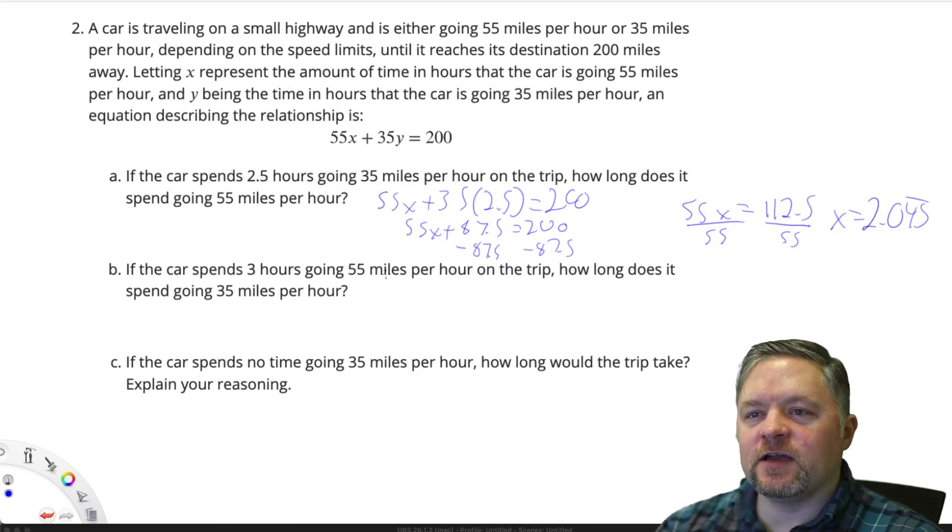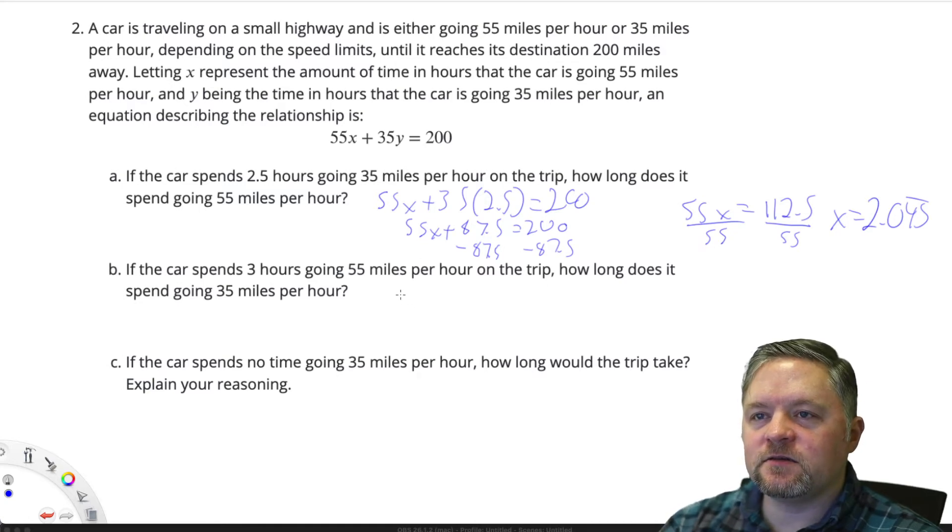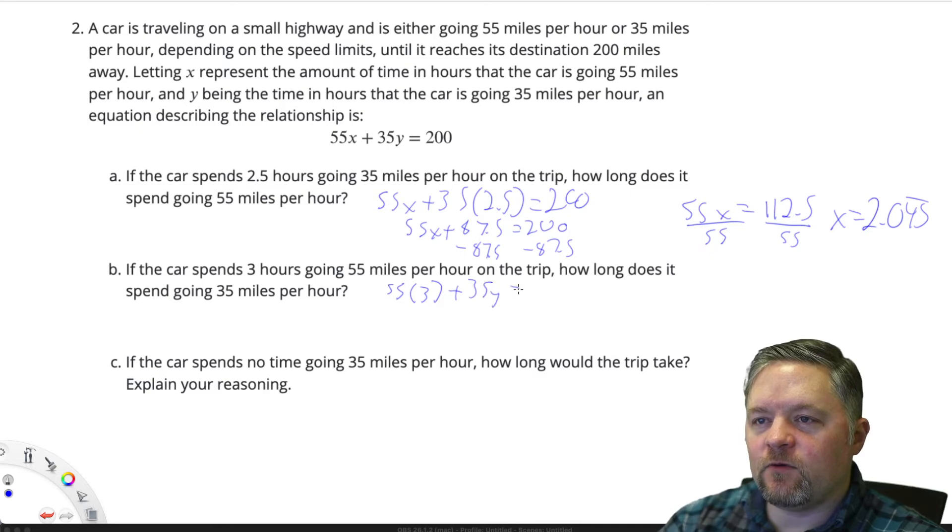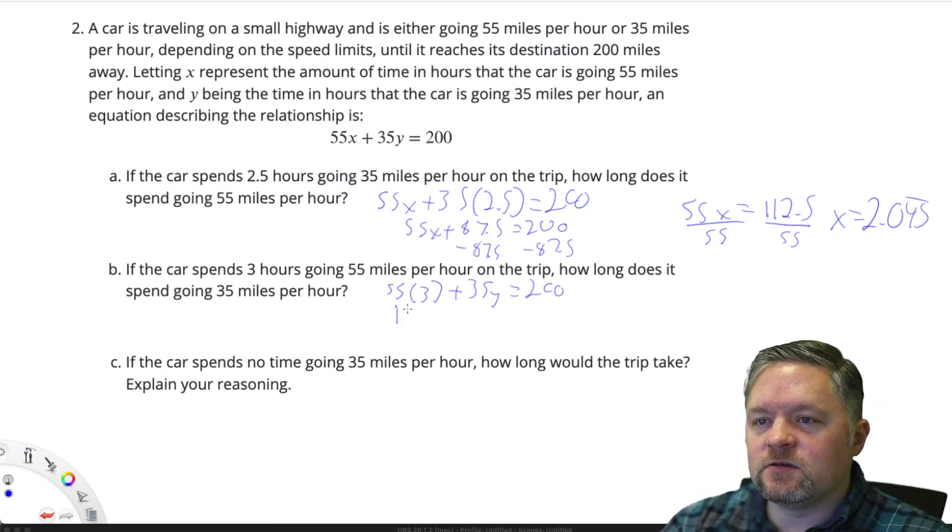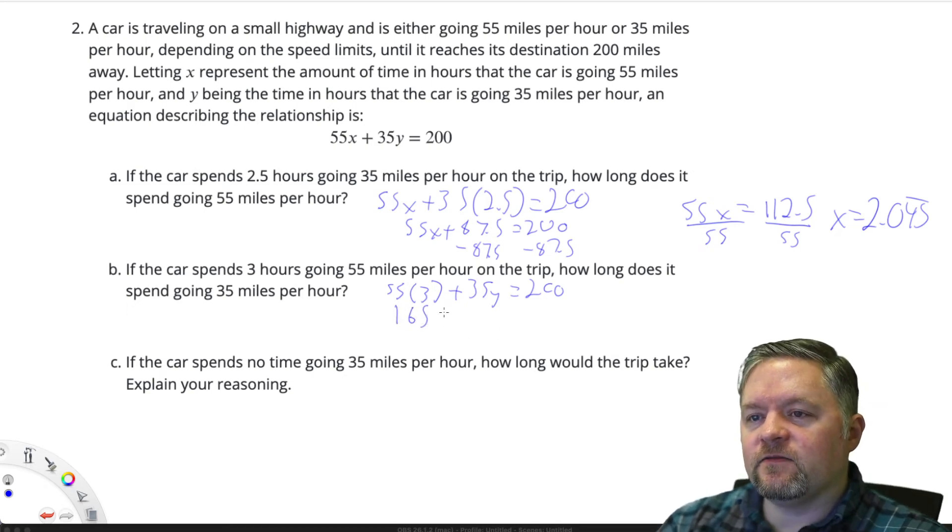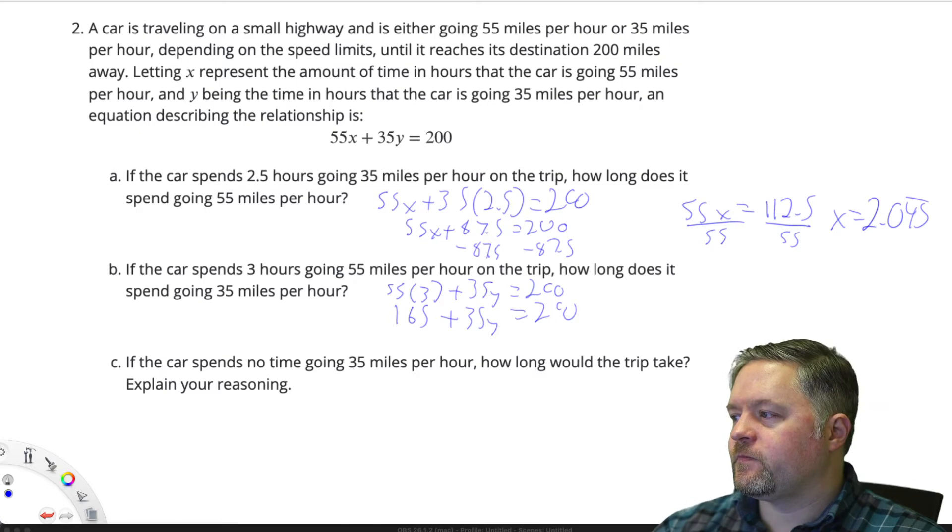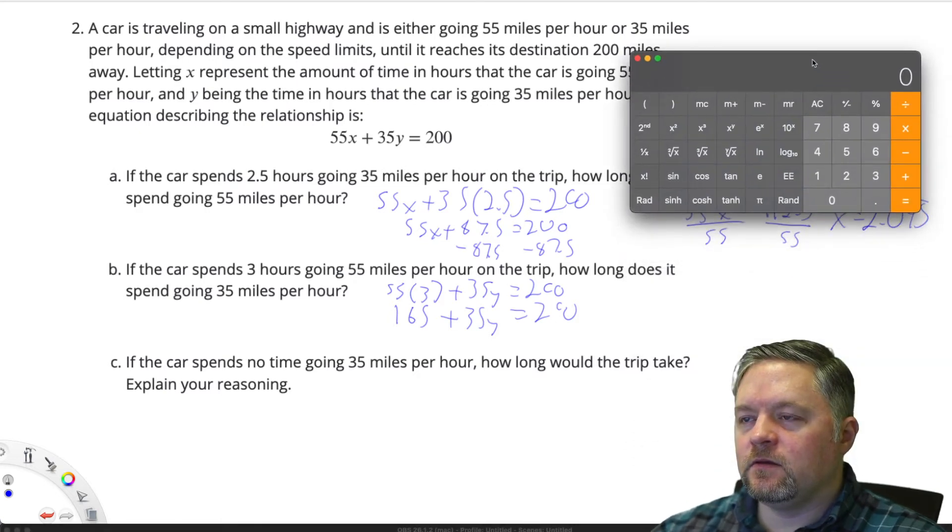If the car spends 3 hours going 55 miles per hour on the trip, how long does it spend going 35? Well, then we just have to plug 3 hours into the x. So, 55 times 3 plus 35y equals 200. 55 times 3 is 165 plus 35y equals 200.